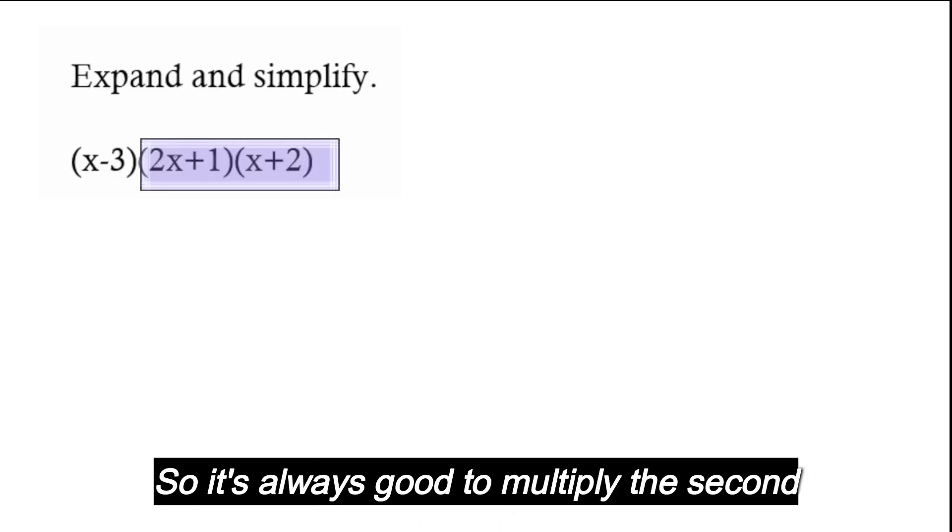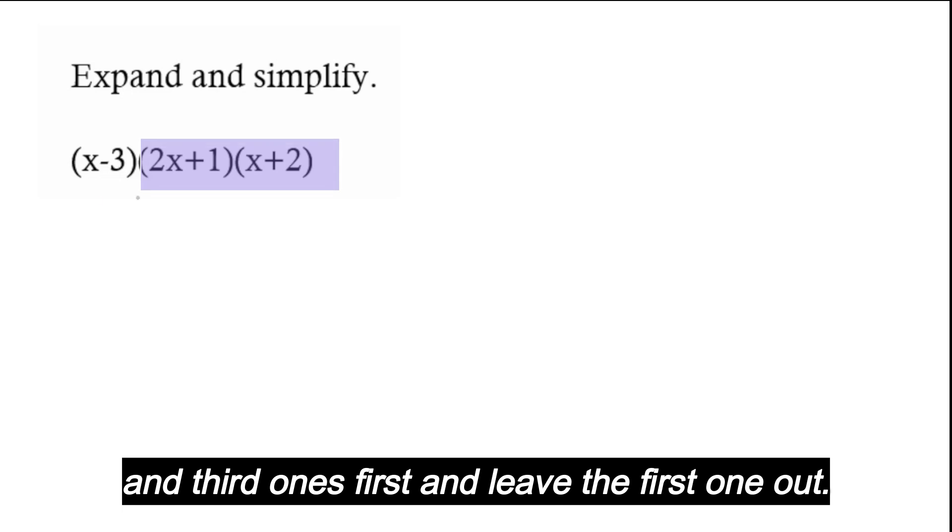So whatever the order you multiply them, you get exactly the same answer. So when you multiply these three together, we multiply two of them first and then multiply the next one. So it's always good to multiply the second and third ones first and leave the first one out.